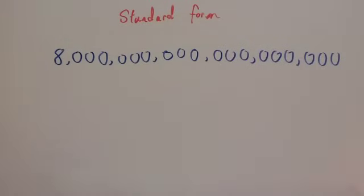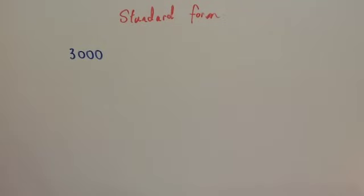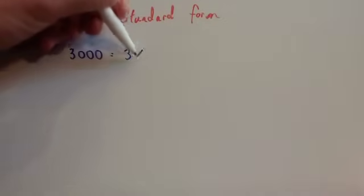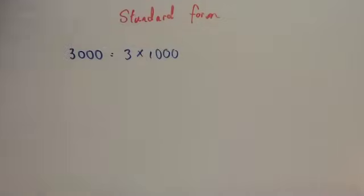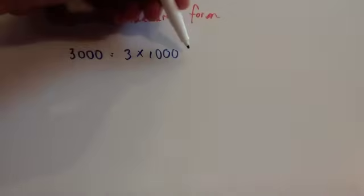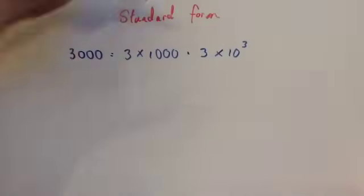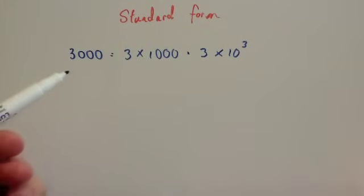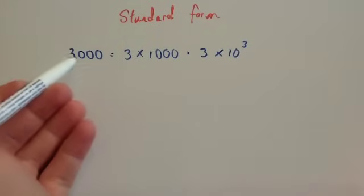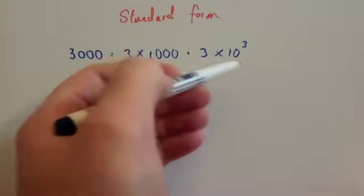In this video we're going to look at standard form. Standard form is a way of writing very, very large numbers in a short way, or very, very small numbers in a short way. Notice if I started with 3,000, I could write that in a different way. Rather than writing 3,000, I could write 3 times 1,000. Alternatively, that's equal to 3 times 10 cubed, because 10 cubed is 1,000. This is the ordinary number, 3,000, and this is in standard form.